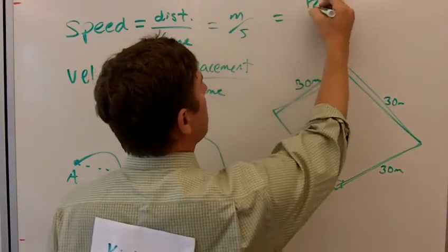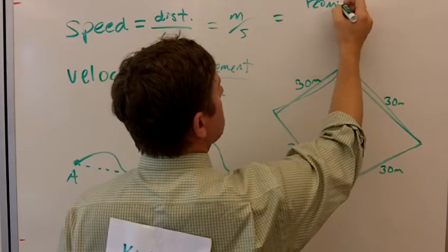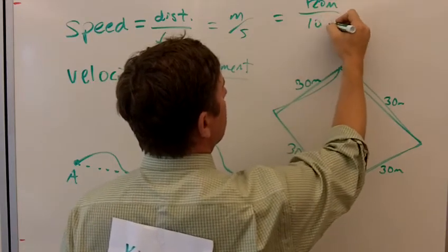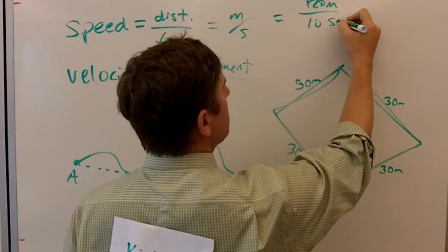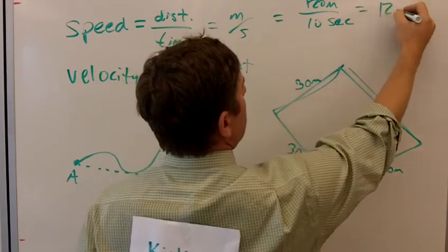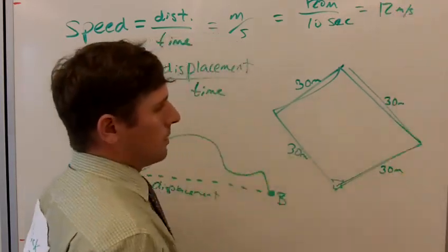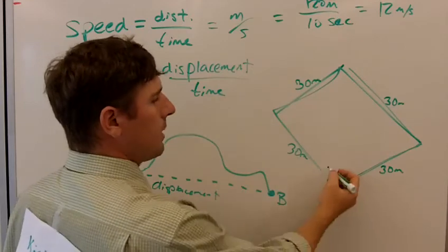30 meters and 30 meters on all four sides, so a total of 120 meters. If we say that he did that in 10 seconds, then what would his speed be?